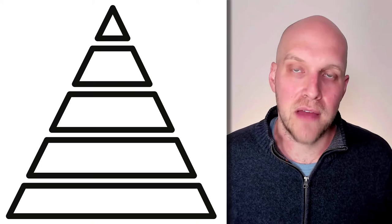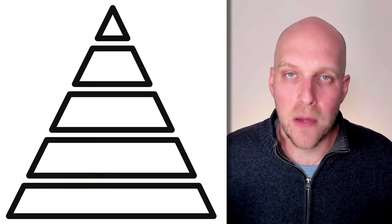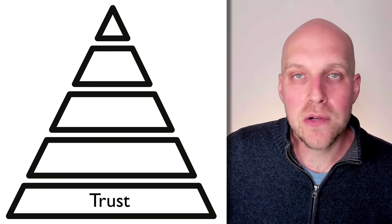What you see on the screen here is a pyramid, and this is represented throughout the book as it talks about the five dysfunctions, because each dysfunction is built upon the last one. At the base, at the foundation, the core dysfunction is trust, because without trust, nothing works. If you can't trust your employees, if your employees can't trust you, if the leadership team is fighting and they don't really trust each other, then nothing is going to work.